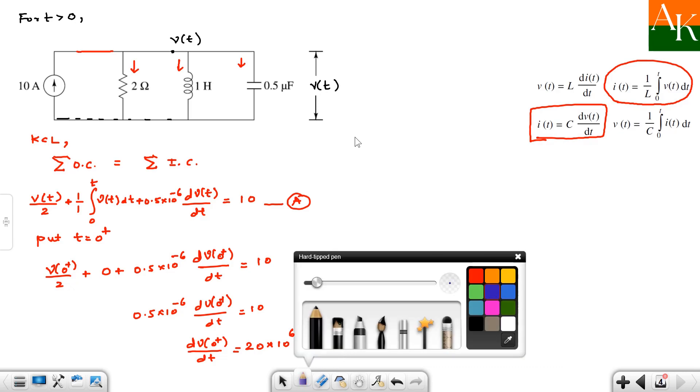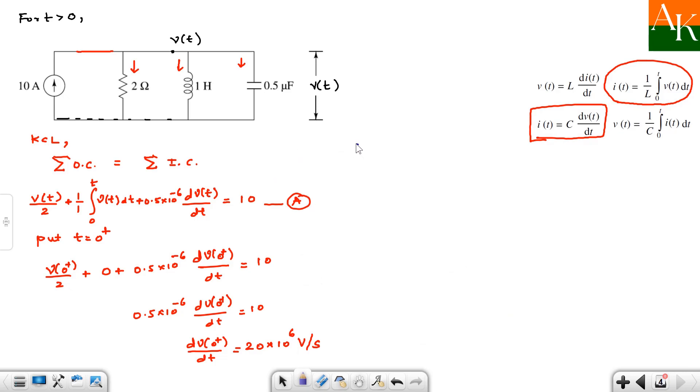Now the last part. Now you have to calculate second derivative. So for that purpose we will differentiate equation A with respect to t. When you differentiate this equation, this will become 1 by 2 dV of t by dt. Here is integration and now you are doing differentiation. So these two cancel. And you will get 1 V of t. This will become second derivative. So d²V of t by dt². And right hand side, this becomes 0.